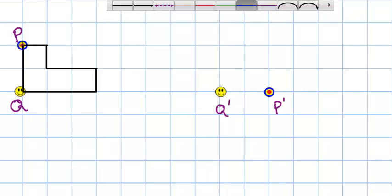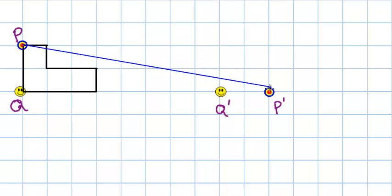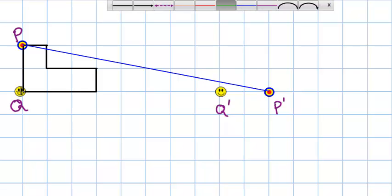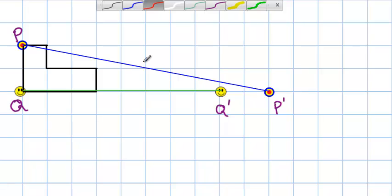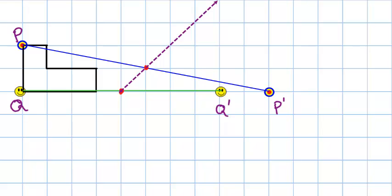What you do is you connect P with P prime and you connect Q with Q prime. And then you find the center of each of those segments. So the center between P and P prime is right here and the center between Q and Q prime is right here. Your axis of reflection is going to connect those two centers. So there's the axis of reflection.